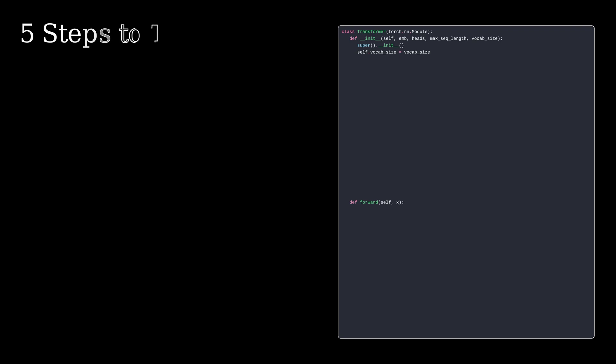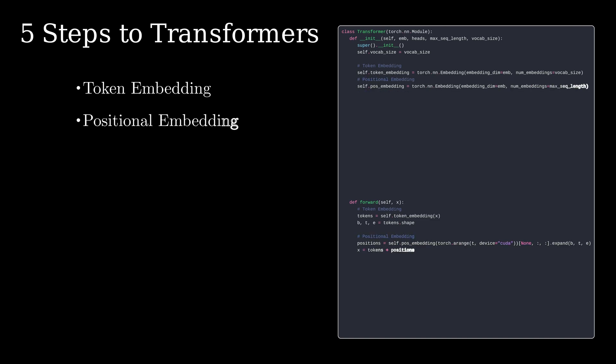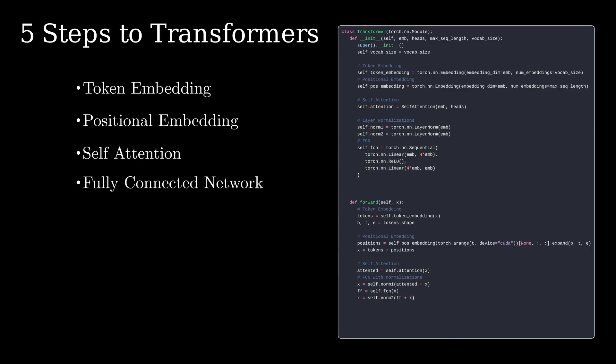There are five steps to transformers. Everything starts with the token embedding where each word is represented as a vector. We then add position information to these vectors using positional embedding, which is followed by the self-attention, and then a fully connected network which leads to the output.